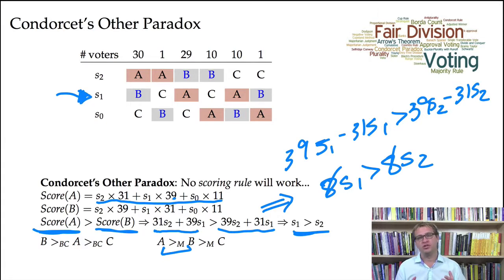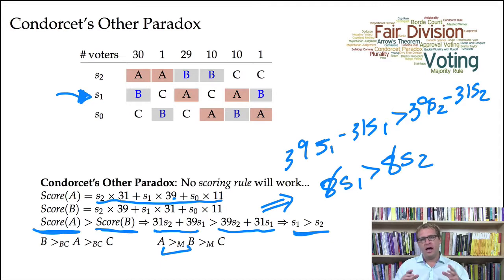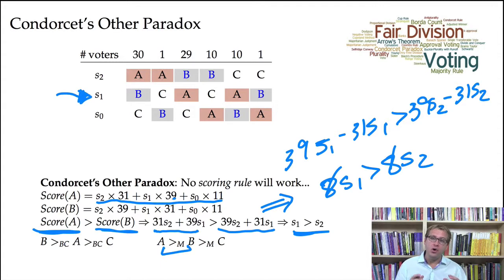But that, of course, is ridiculous. No sensible scoring method can give more points to second-ranked candidates than to first-ranked candidates. So this is Condorcet's other paradox: a simple observation that there are situations in which the Condorcet winner exists, but no scoring method will actually elect the Condorcet winner.